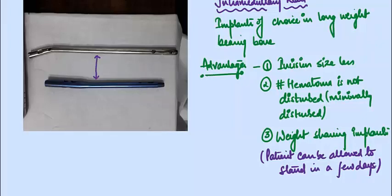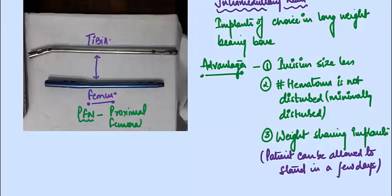Here I have purposefully placed two nails: the upper nail belongs to your tibia and the lower nail belongs to your femur. The nail in the image is called a PFN — Proximal Femoral Nail. The tibial nail has a water angulation, while femoral nails have a curve as per the curve of the femur. These questions have already been asked in the PGI exam.